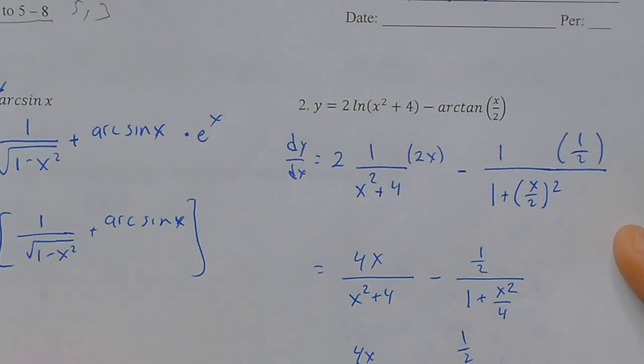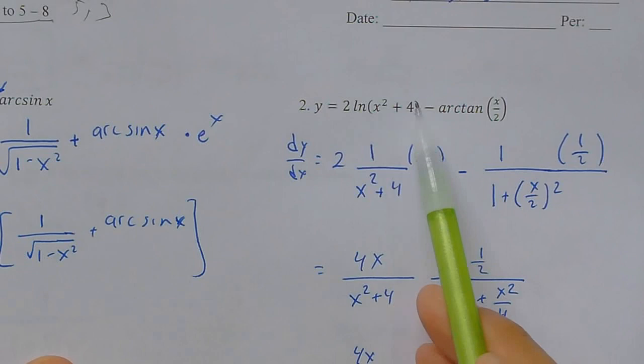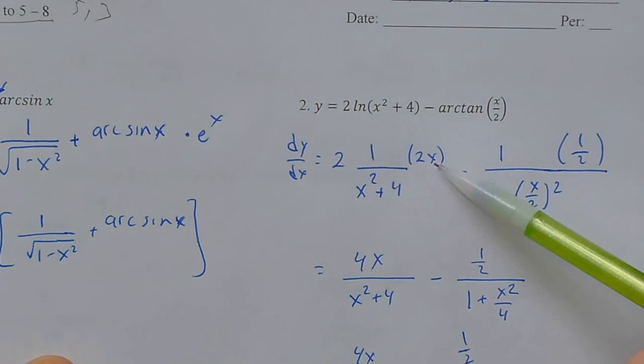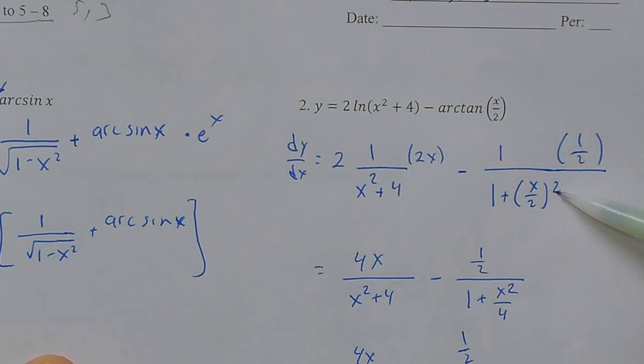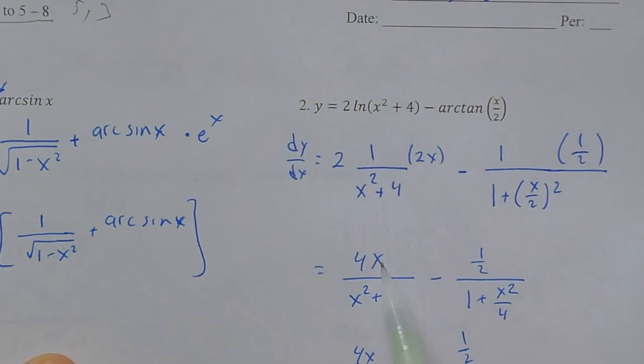Number two has a lot of algebra. It is the natural log of that expression, which gives us one over that mess times the derivative of that mess — that's the chain rule. For the arc tangent, the derivative is one over one plus u squared, and I take the derivative of u, which gives one half.